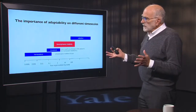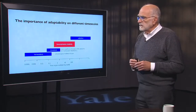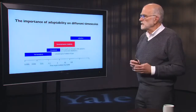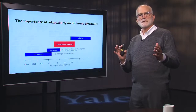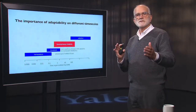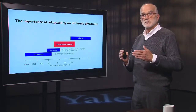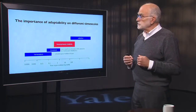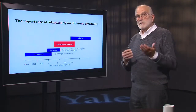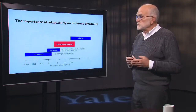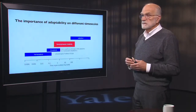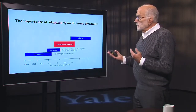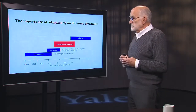As background to this, it's helpful to think about how organisms adapt on different time scales. On a very short time scale, they have homeostatic adaptation — regulation of blood pH, of the amount of water in tissues, things like that. That goes on on a scale of seconds to minutes.